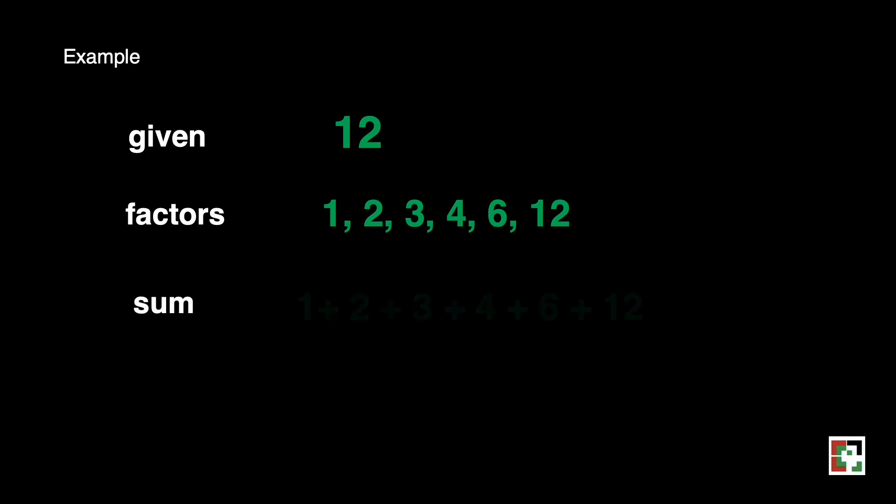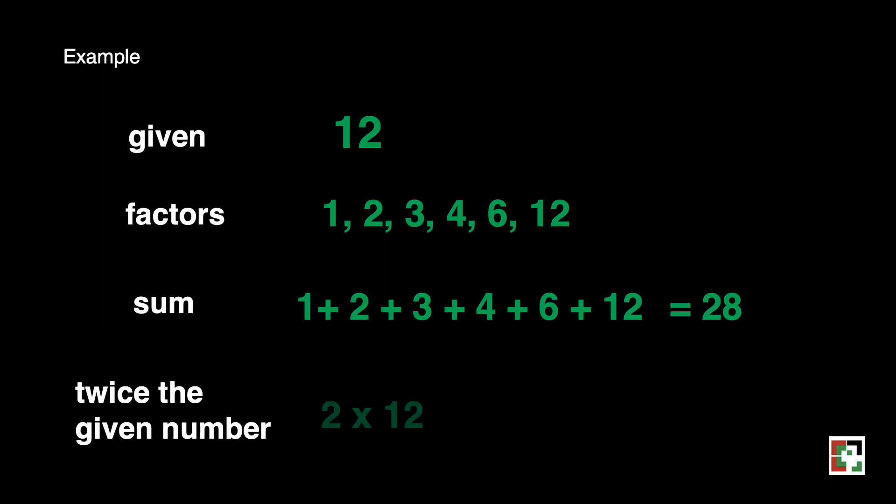What is the sum of the factors? That's 1 plus 2 plus 3 plus 4 plus 6 plus 12. That is equivalent to 28. What is twice 12? That is 2 times 12. That will give us 24.